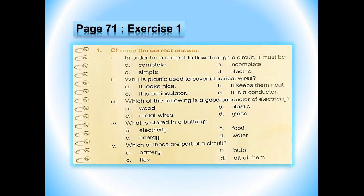Now open page number 71 of your science book and let's solve exercise number 1 of unit 8. Exercise 1 is: choose the correct answer. Multiple options are given — we have to circle the one correct option. Number 1 is: in order for a current to flow through a circuit, it must be — A. Complete, B. Incomplete, C. Simple, D. Electric. The correct option is A: complete.